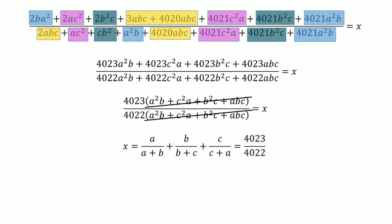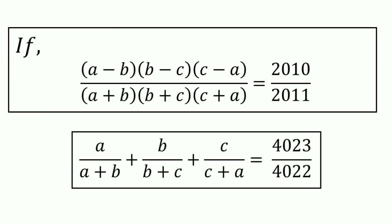This is the value we needed to find. So if (A minus B)(B minus C)(C minus A) divided by (A plus B)(B plus C)(C plus A) equals 2010 divided by 2011, then A/(A+B) plus B/(B+C) plus C/(C+A) equals 4023 divided by 4022. That is our correct answer. I hope you all enjoyed this problem — I know it involves lots of calculation, but manipulating the terms is the best part. And here we end.